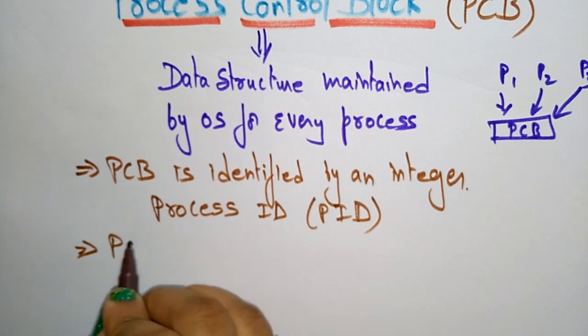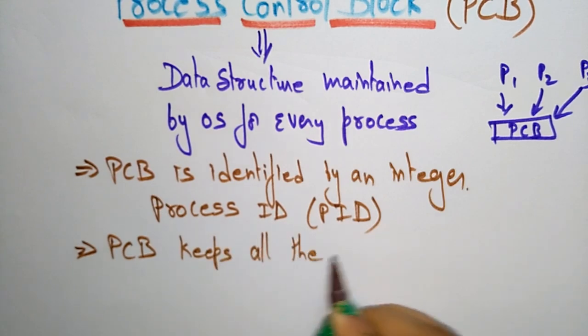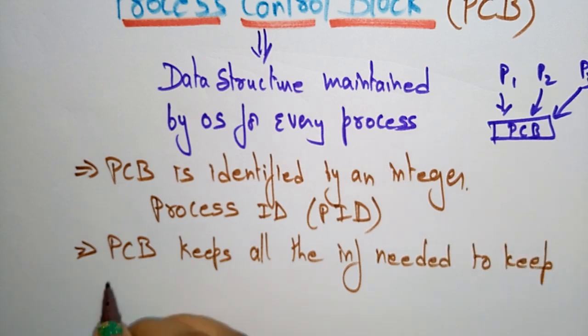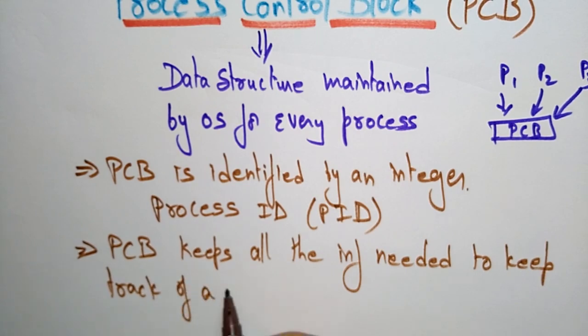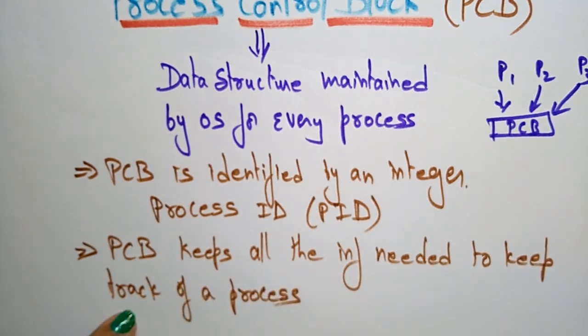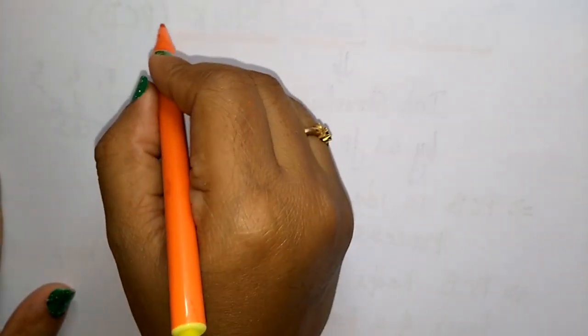The use of the Process Control Block is that it keeps all the information needed to keep track of a process. So what type of information does this Process Control Block store? Let me explain that. The PCB stores all related information of a process.